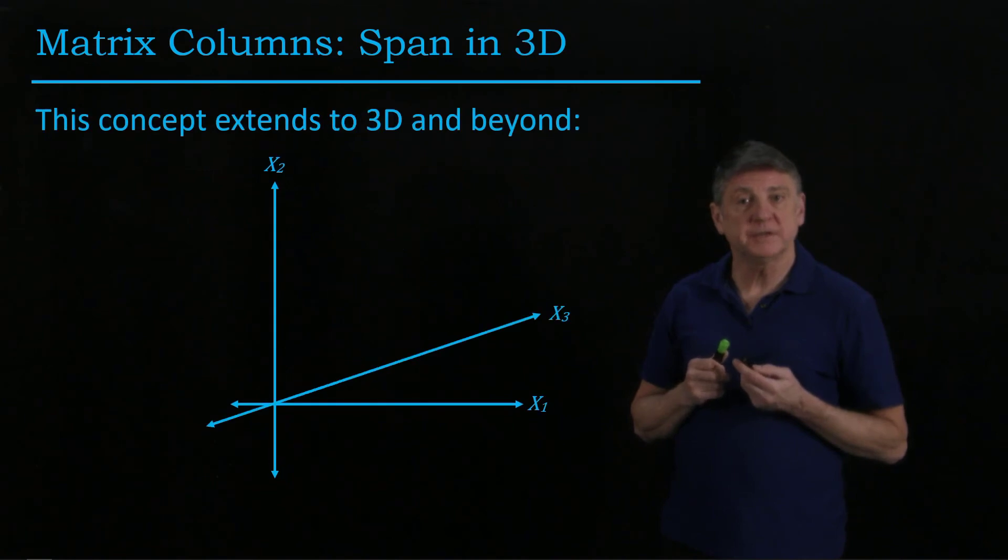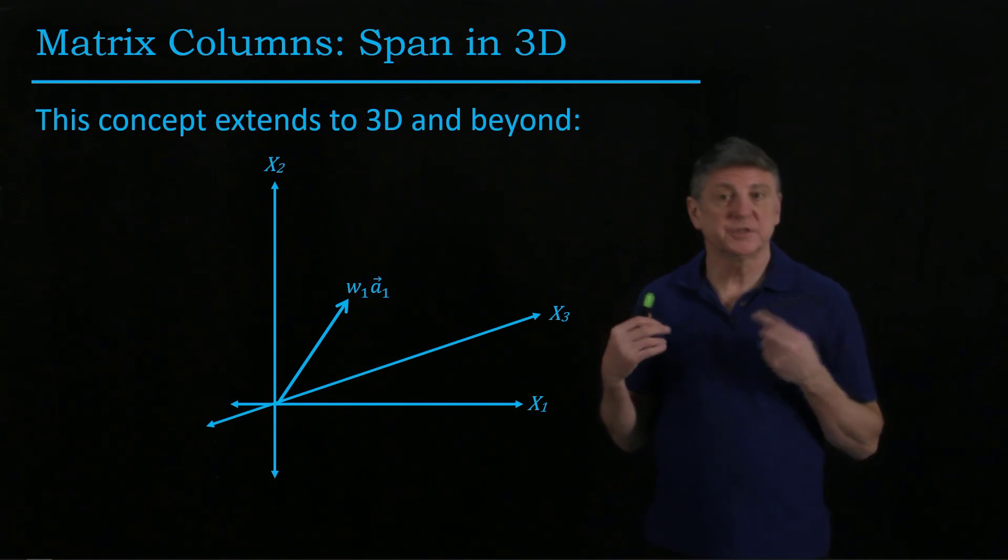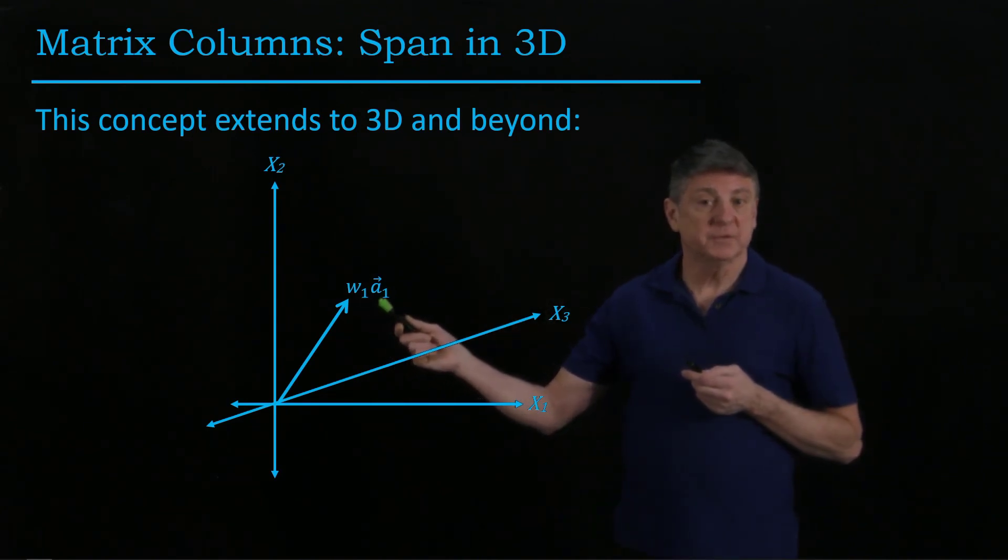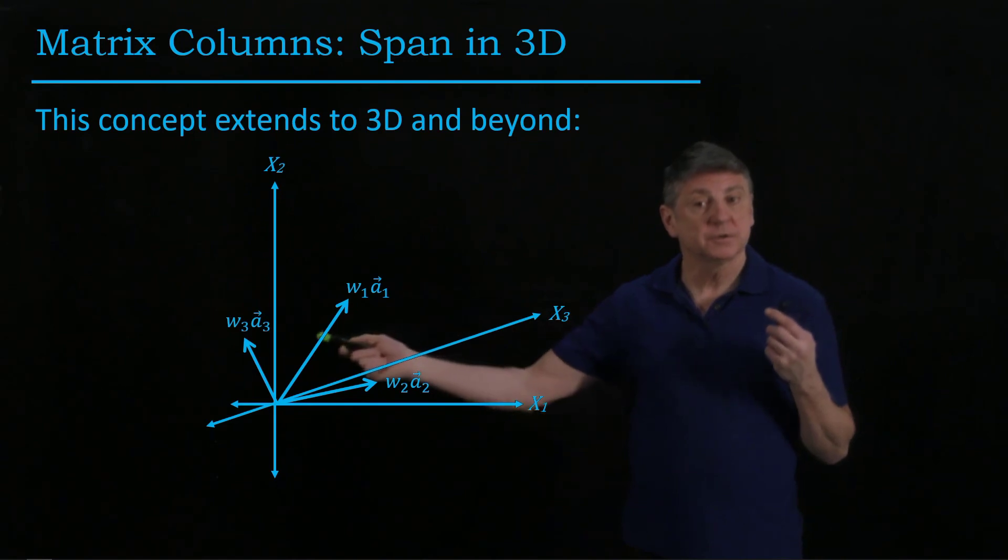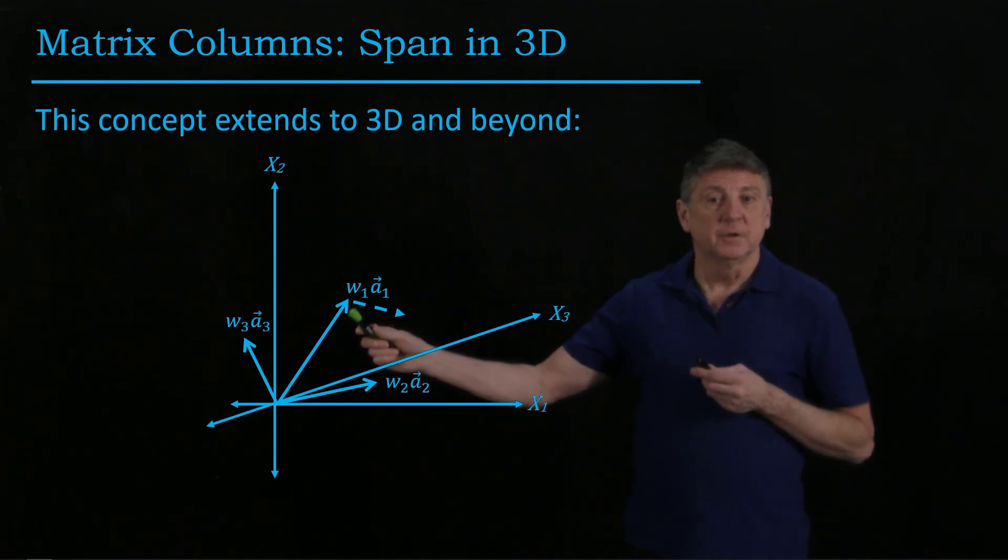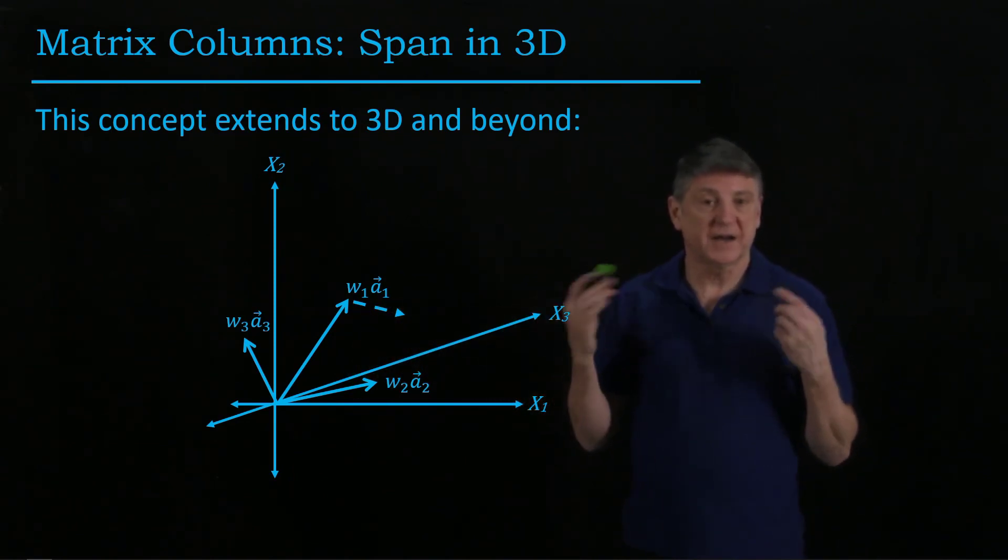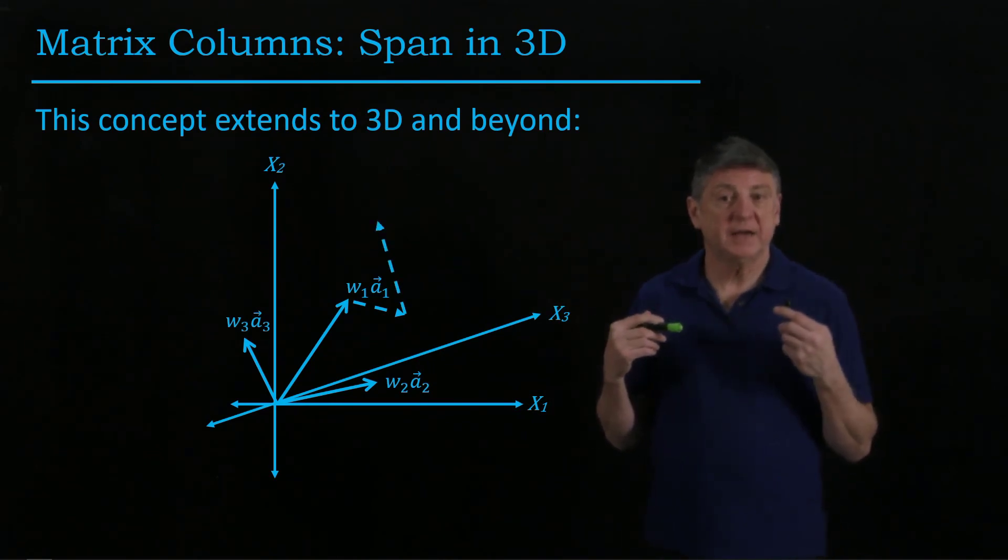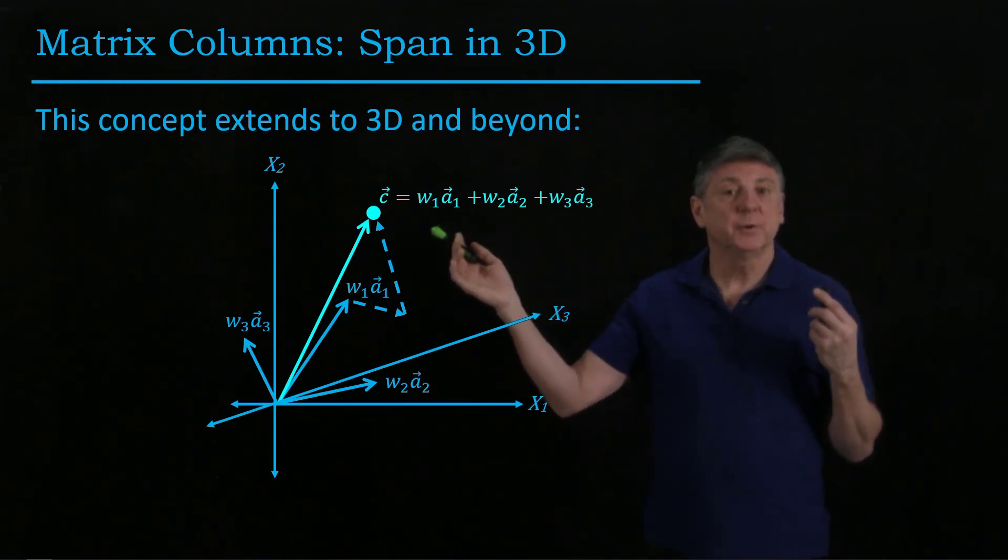This also extends to three dimensions. So in three dimensions, what we have is a similar situation. Here we have a weight 1 times the first column of the matrix, and then we have weight 2 times the second column of the matrix, and we have weight 3 times the third column of the matrix. And what we can then do is we can just take a step from the tip of this vector in the direction, for example, of this, and these are not parallel on the plane because these were actually composed in three dimensions. And then we add the third weighted vector, and that is the vector c that we want to represent.